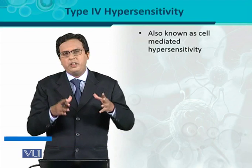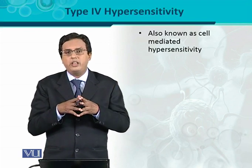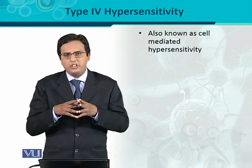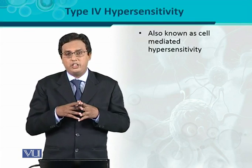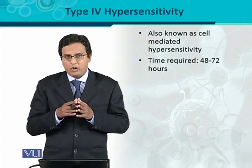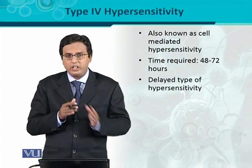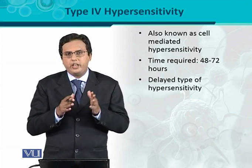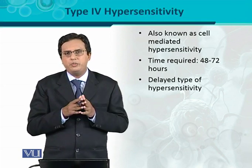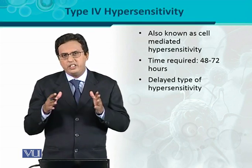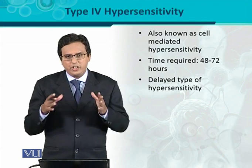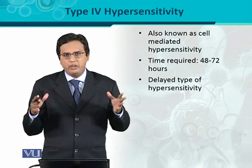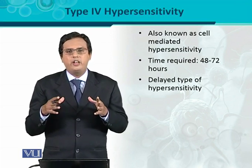In contrast, the other three types — type 1, type 2, and type 3 — do not involve direct cell-to-cell interaction; instead, there are secretory molecules like antigen-antibody reactions. Type 4 is also called delayed hypersensitivity because the time frame is much longer. While the other types require a few hours, type 4 requires many hours or even two to three days, which is why it is called delayed hypersensitivity.